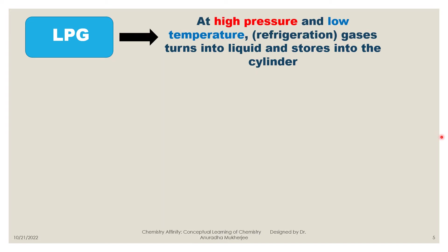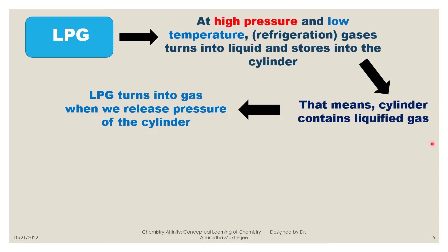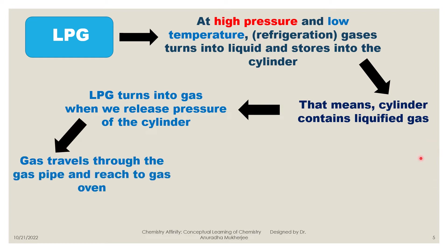LPG, or liquefied petroleum gas, means petroleum gas is converted into liquid. To convert petroleum gas into liquid, it needs high pressure and low temperature. At high pressure and low temperature, petroleum gas converts into liquid, and that liquid is stored in the cylinder — the LPG cylinder which we use for cooking at home. The cylinder is a thick-walled, heavy container so that high pressure can be maintained and the petroleum gas remains liquid inside.